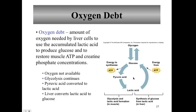In repaying the oxygen debt, the debt is the amount of oxygen necessary to support: (a) the conversion of lactic acid to glucose, (b) the resynthesis of ATP and creatine phosphate, and (c) the return of tissue and blood oxygen back to pre-exercise levels. Oxygen debt is the amount of oxygen needed by liver cells to use accumulated lactic acid to produce glucose and restore muscle ATP and creatine phosphate concentrations to pre-exercise levels. Lactic acid gets converted back to pyruvate in the liver.